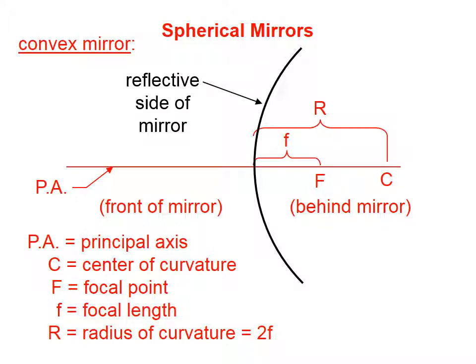The reflective side is closest to where the object is. The other side of the mirror, that is, the back side of a convex mirror, is where the focal point is located, where the center of curvature is located.